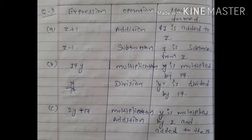Next, question number 3: identify the operation. हमें operation बताना है — कि इसमें addition use हुआ है, subtraction, division, multiplication. In forming the following expressions, tell how the expressions have been formed. तो हमने यहाँ पे तीन partition किये: expression, operation and how it is made.